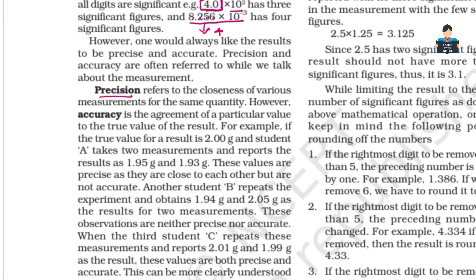Precision refers to the closeness of various measurements for the same quantity. If we take a lot of measurements, they should remain close to each other — that is precision.